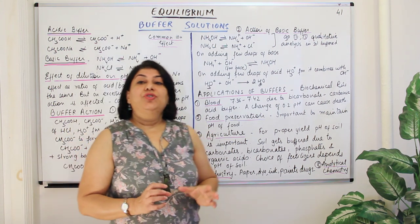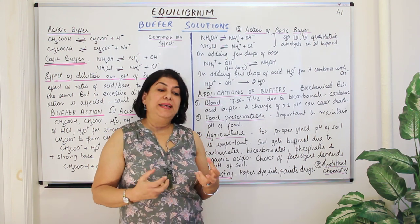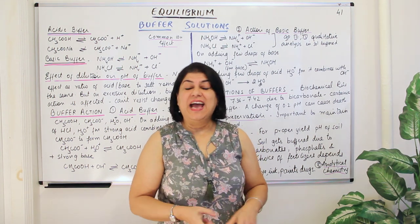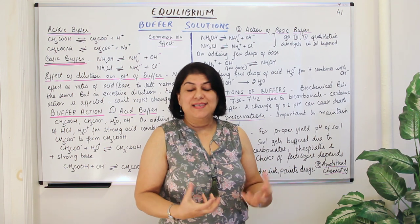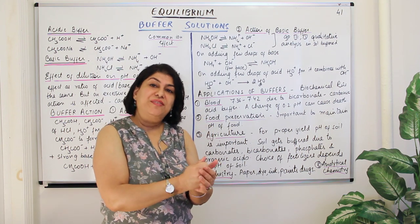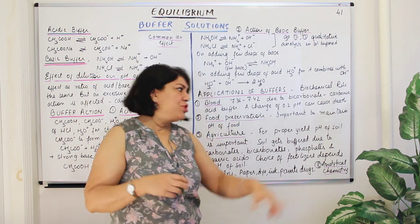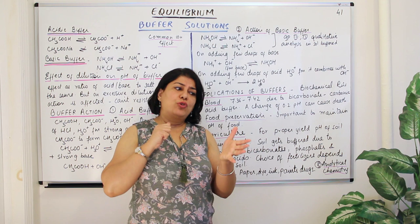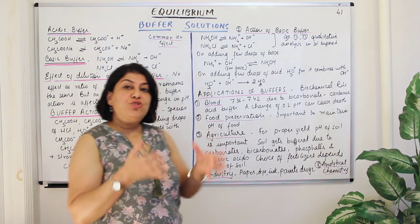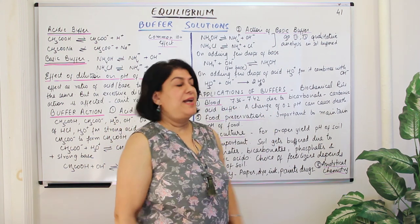The second application of buffers is in food preservation. Whatever we consume needs to be maintained at an appropriate pH. You do not want to introduce food that forces a change in the pH of body fluids. Therefore, when food is preserved, it is done in a manner to maintain its pH at a certain level.